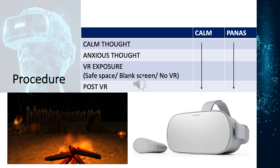During the study, secondary school consent forms were collected, then all participants across populations were given hard copies of the information sheet to read through. Older adult and higher education participants signed the consent form, and researchers verbally reiterated the key points of the study to ensure fully informed consent. Participants were then asked to complete questionnaire 1, which included demographic information, use of virtual reality and medical history.